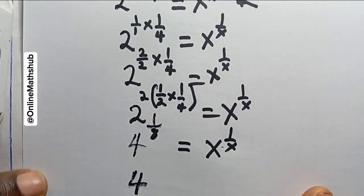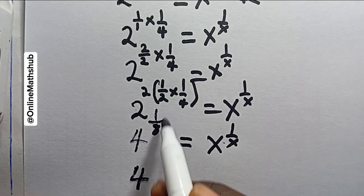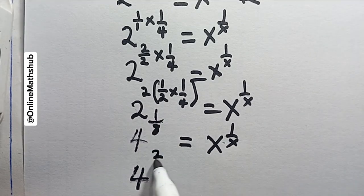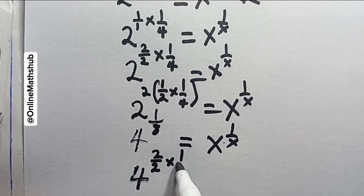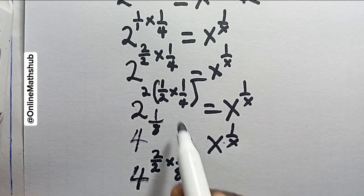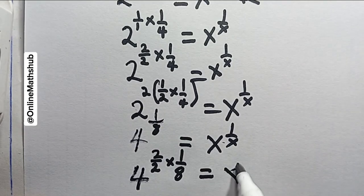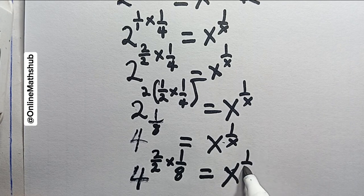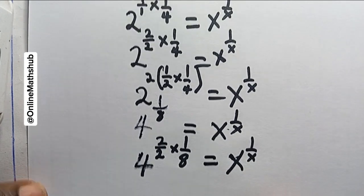What I'm going to do next is still multiply this side by 2 divided by 2, which is the same as 1. Then I'll multiply this by 8, by this 1 over 8 over here, and this will be equal to x power 1 over x.